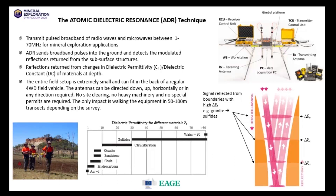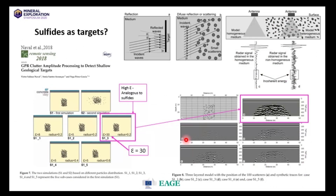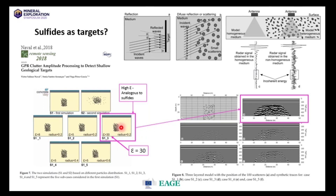For some background, this is a case study undertaken by Naval et al. in 2018, where they embedded grains with different radii and different dielectric permittivity values within clay and got a synthetic image of what that might look like in ground penetrating radar. Although changing the radius has no major impact on image quality, increasing the dielectric permittivity to values of around 30 — significantly higher than the surrounding material — dramatically increases image quality. This is equivalent to embedding sulfides within a meta-sedimentary or sedimentary host rock.